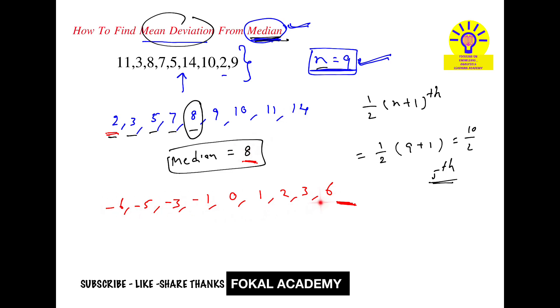This is the deviation data due to median. Now for this deviation data, we find the mean. Mean deviation is the sum of all observations under modulus divided by total number of observations. That is: absolute value of (minus 6 minus 5 minus 3 minus 1 plus 0 plus 1 plus 2 plus 3 plus 6) divided by 9. The sum of all observations gives 27 with modulus, upon 9 it gives 3.